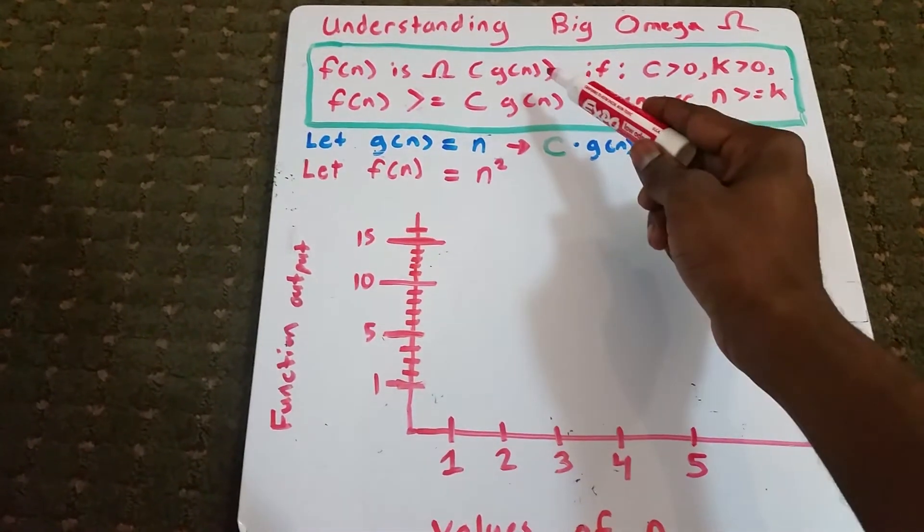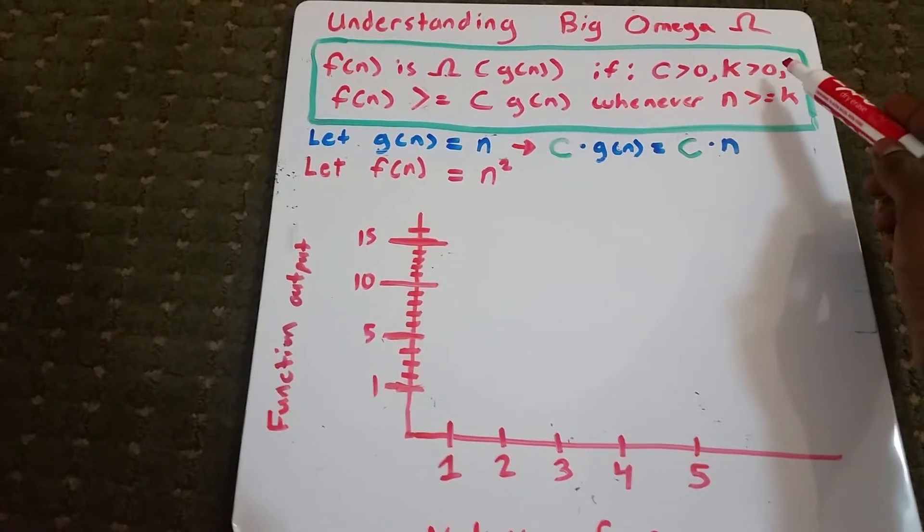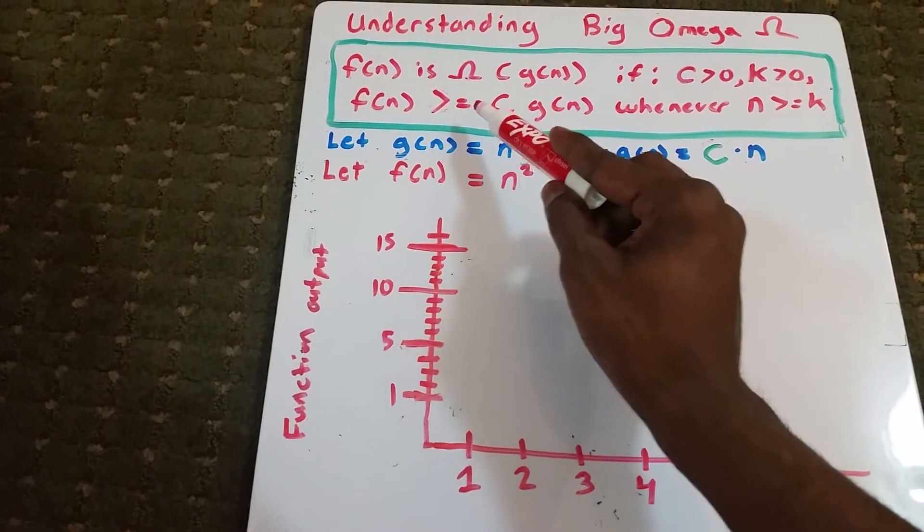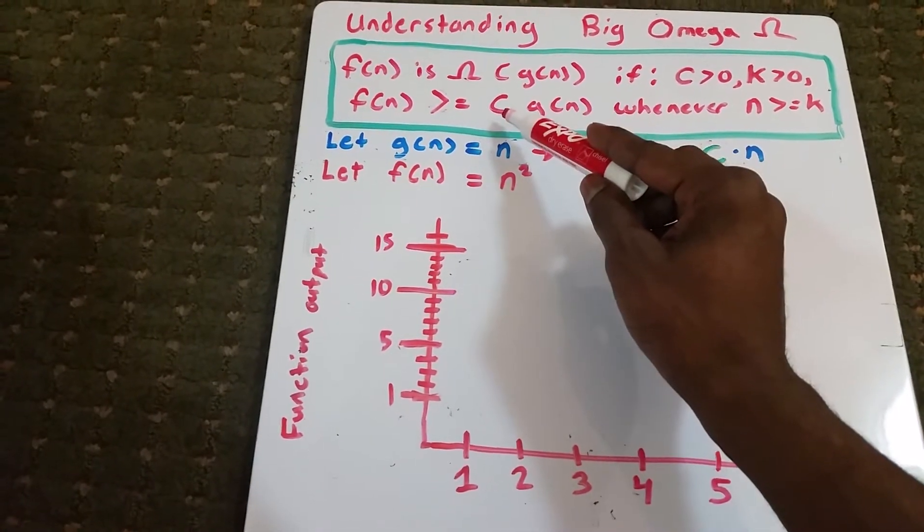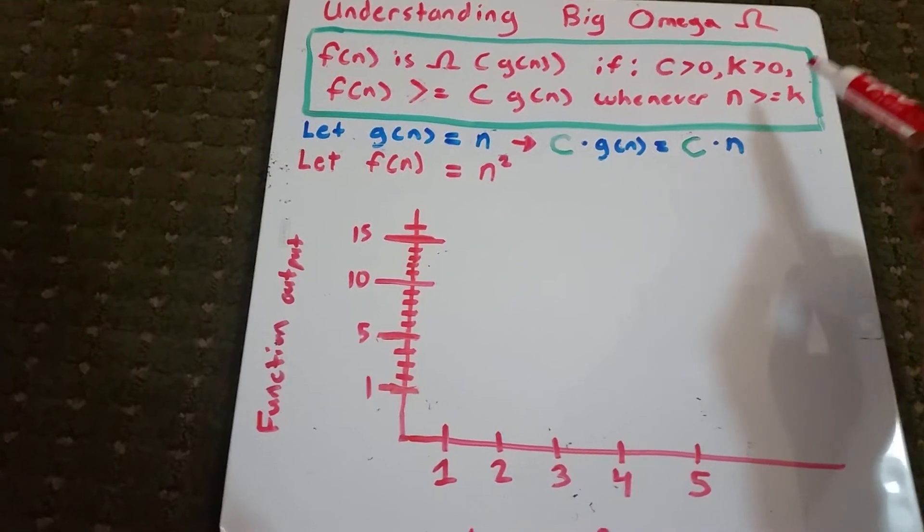f of n is Big Omega of g of n if c is greater than 0, k is greater than 0. These both are constants. And f of n is greater than or equal to some constant c times g of n whenever n is greater than or equal to some constant k.